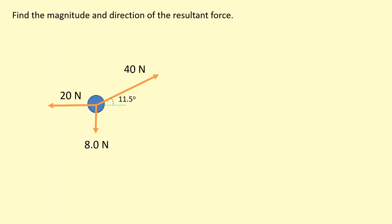Now with three forces, it's best to resolve the 40 newton force into horizontal and vertical components. Using 40 cosine 11.5, you find the horizontal component is 39 newtons, and using 40 sine 11.5, you find the vertical component is 8 newtons. The 8 newtons from above and below cancel out, so there's no net force up or down. However, there is a resultant force towards the right: 39 minus 20 gives us 19 newtons towards the right.